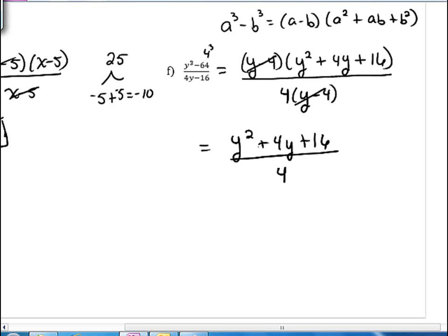We can't cancel anything else here because this is addition, and it has to be multiplication, so we can't cancel anything else at this point. That ends our lecture on simplifying rational expressions. Let me know if you have any questions. Thank you.